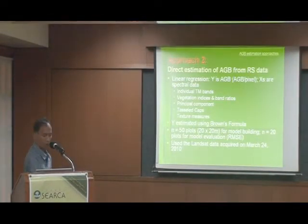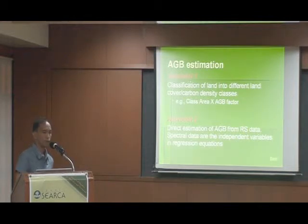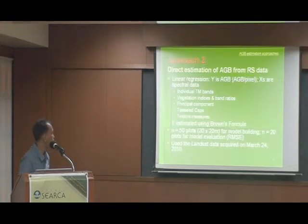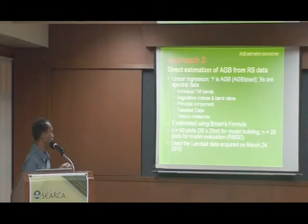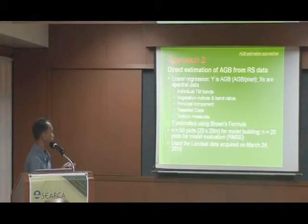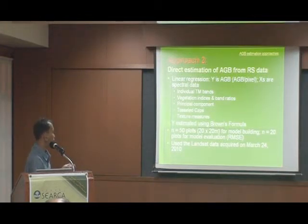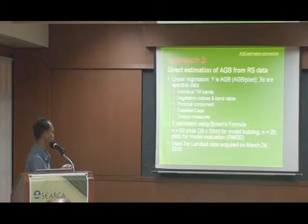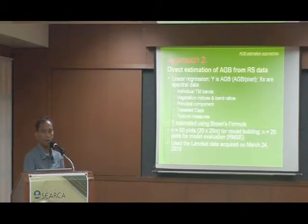For Approach 2, this involves regression modeling of above-ground biomass. We use linear regression where y is the dependent variable — the above-ground biomass — and the independent variables are spectral data grouped into: individual bands, vegetation indices and band ratios, principal components, tasseled cap, and texture measures. In the model, above-ground biomass was calculated using Brown's formula. We used 50 plots of 20 by 20 meters for model building and 20 plots for model evaluation.